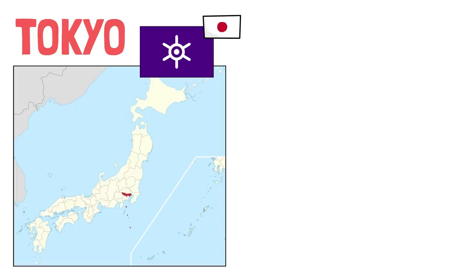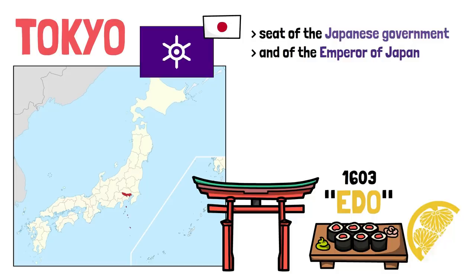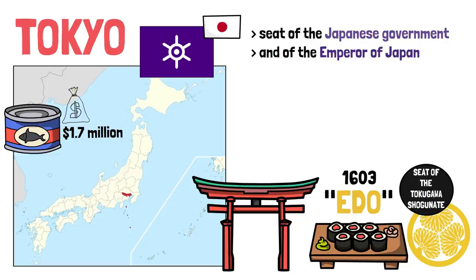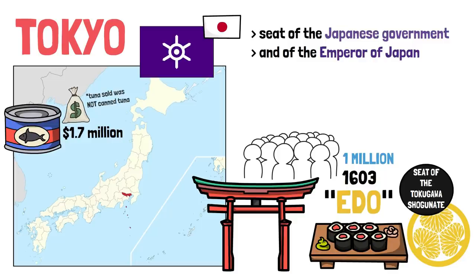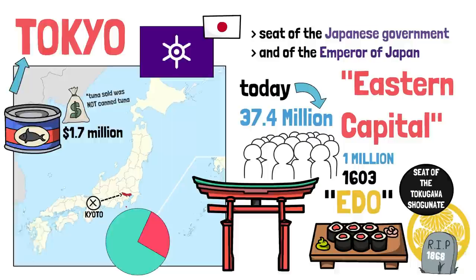Tokyo is the biggest city in the world, the seat of the Japanese government and of the emperor of Japan. Originally a fishing village named Edo, the city became a prominent political center in 1603 when it became the seat of the Tokugawa Shogunate. A fun fact: it began as a fishing village and today the city's fish market is the largest in the world — once, a tuna fish was sold for 1.7 million dollars. By the mid-18th century, Edo was one of the most populous cities in the world at over 1 million people. Following the end of the Shogunate in 1868, the imperial capital in Kyoto was moved to the city, which was renamed Tokyo, literally meaning Eastern Capital. Today, its urban area holds more than a quarter of Japan's total population.